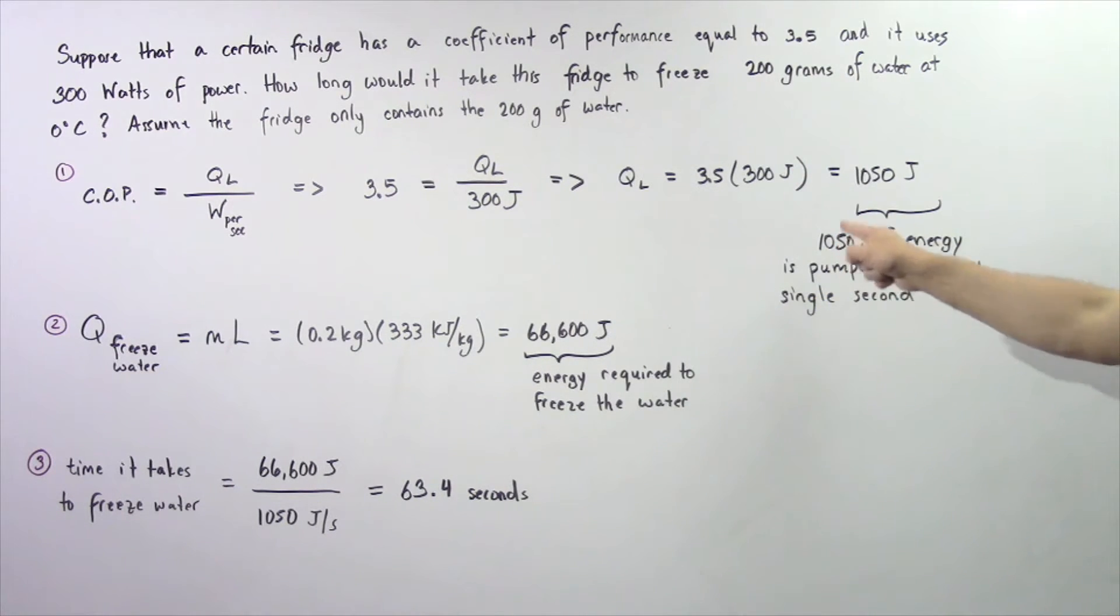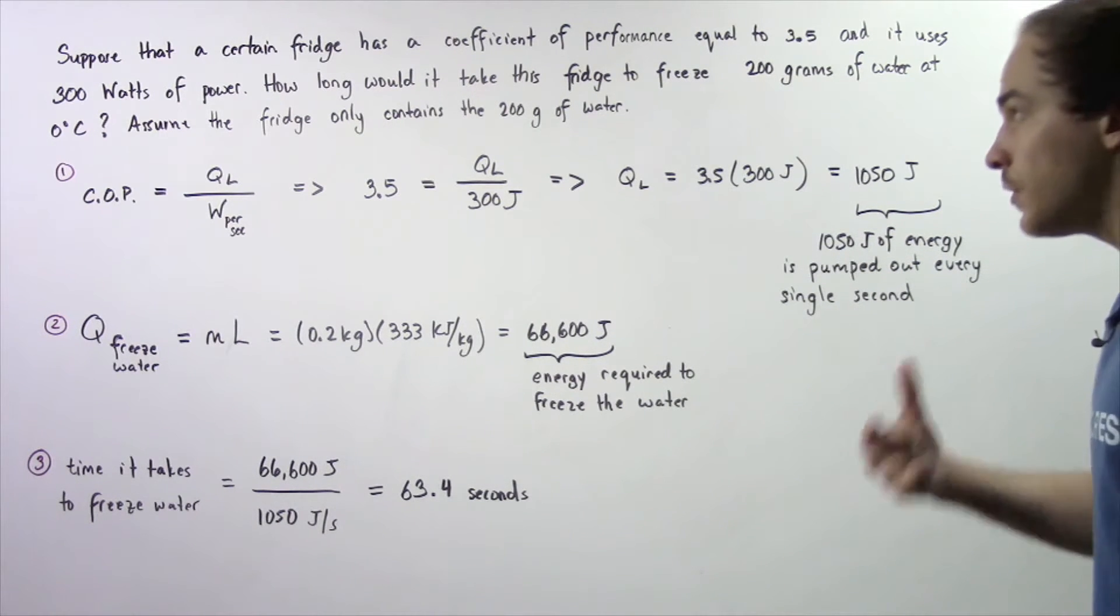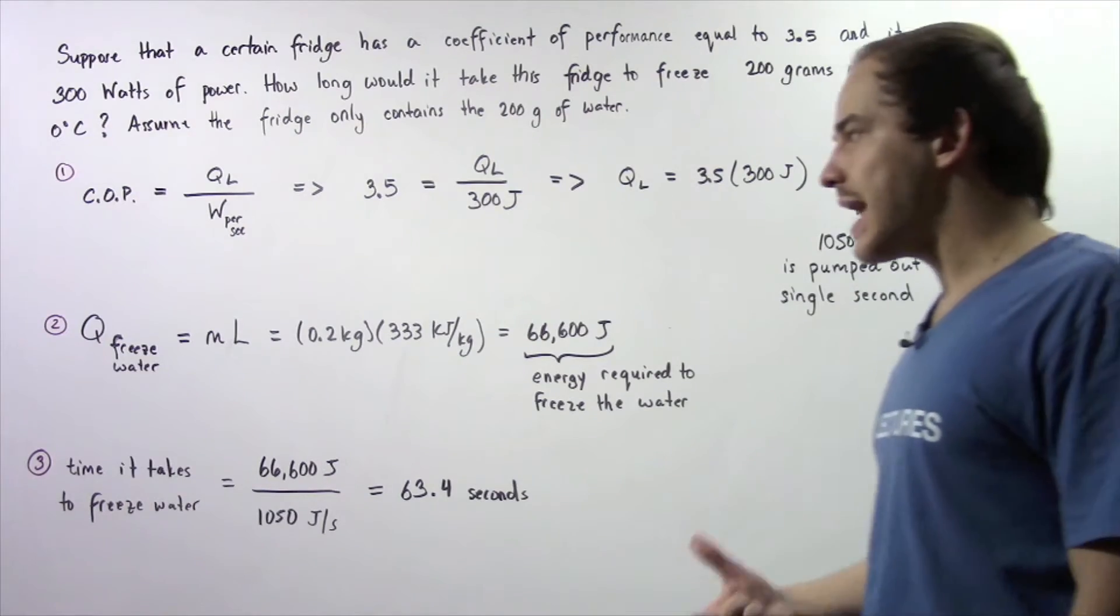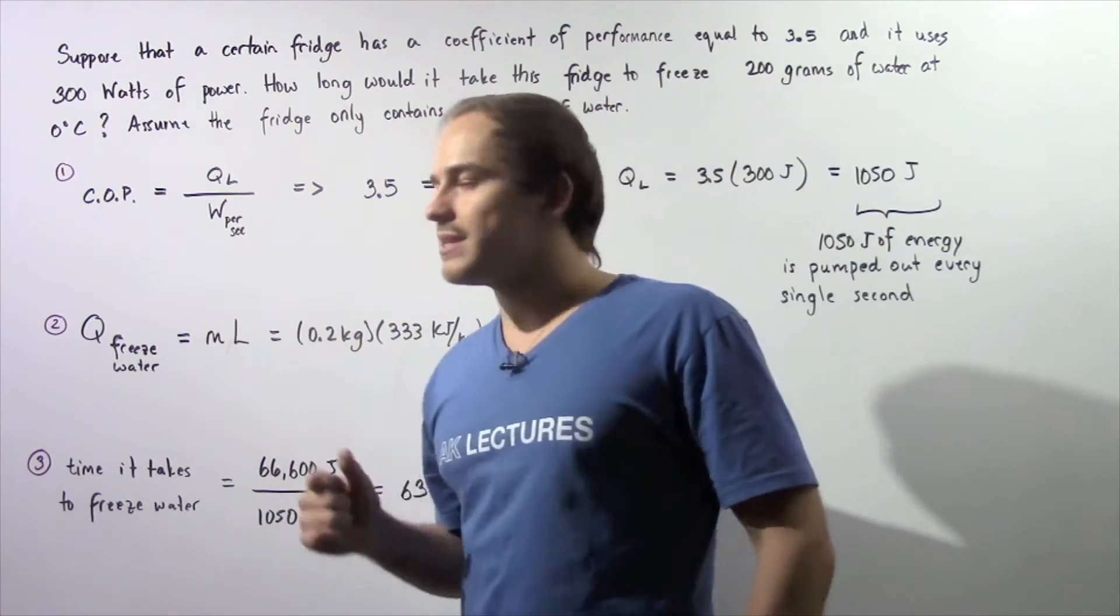So that implies that 1050 joules of energy is pumped out of our fridge every single second. Now let's move on to step 2.